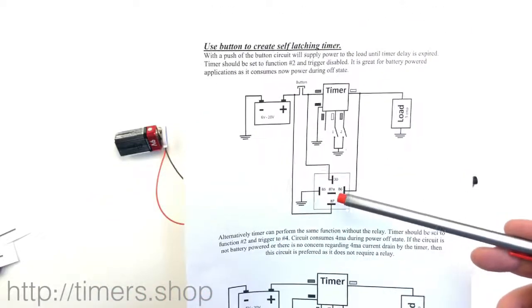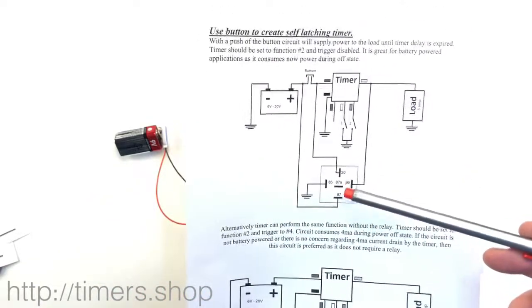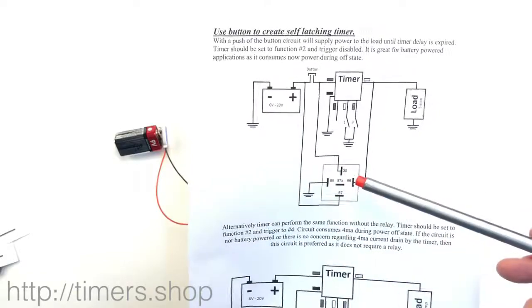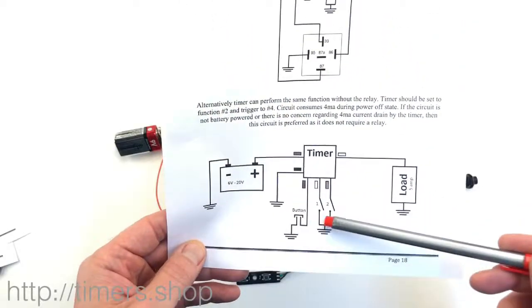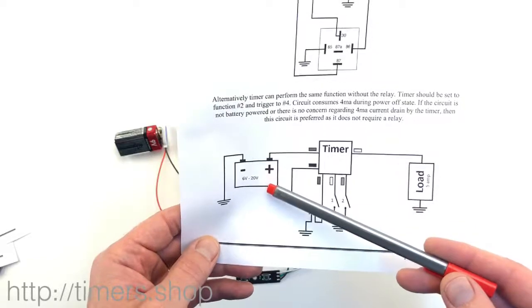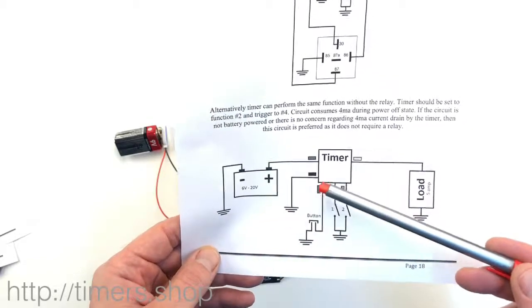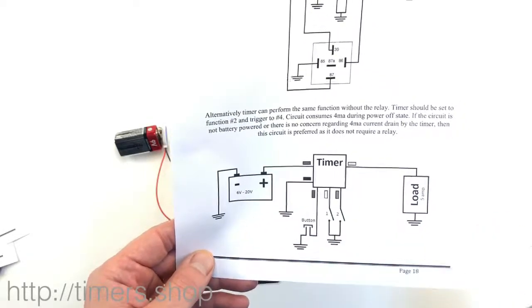It's different from the one with the relay. This consumes no current during the off state, while the relay version still consumes about 4 mA of current. But if your power supply comes from the outlet, you don't really care and it simplifies the circuit.